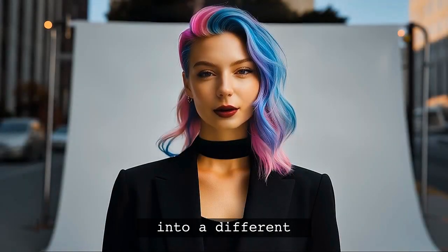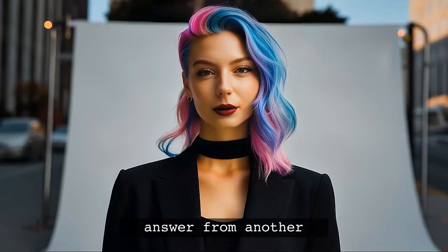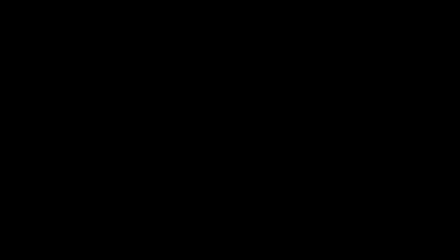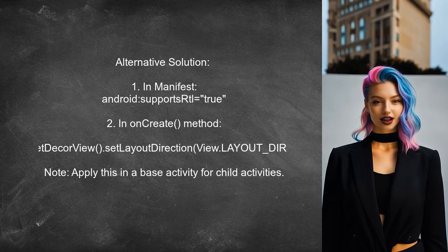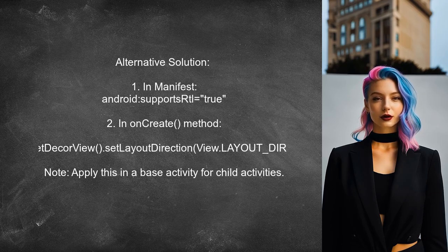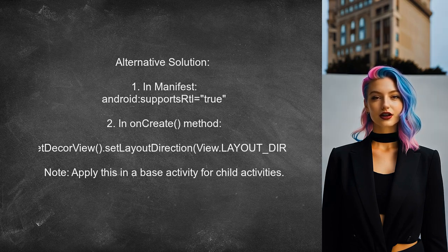Another approach suggests two key steps to force RTL layout. First, in your app's manifest, add support for RTL by including Android supportsRtl set to true. Second, in your activity's onCreate method, set the layout direction to RTL using the command getWindow().getDecorView().setLayoutDirection() with the parameter View.LAYOUT_DIRECTION_RTL.